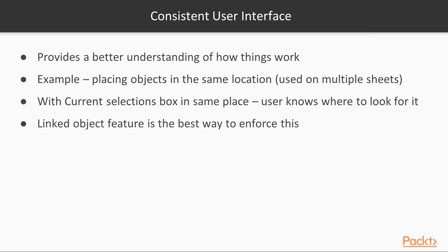A consistent user interface makes it predictable for the user. They will have a better understanding of how things work and will feel more in control. One straightforward example, which we've seen while developing our document, is to place objects in the same location if they're being used on multiple sheets. If the current selections box is always in the same place, then the user will immediately know where to look for it. The linked object feature is the best way to enforce this.